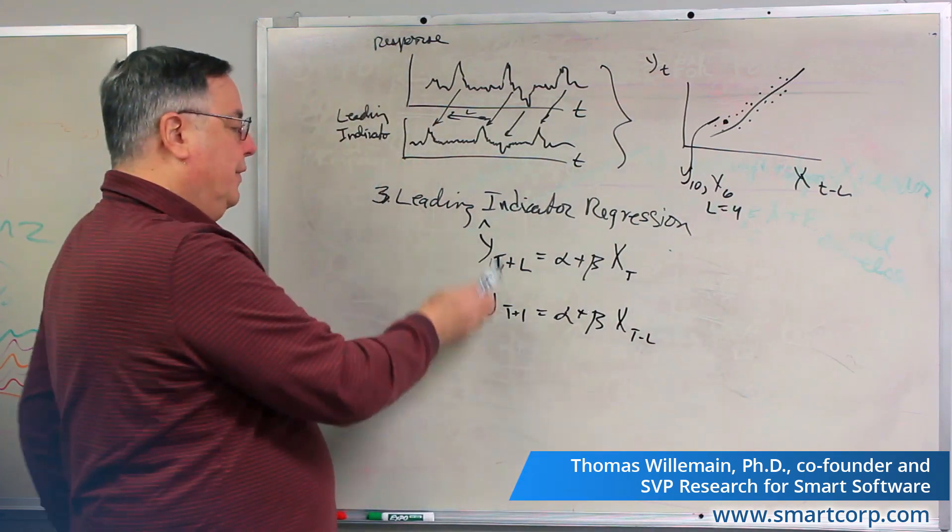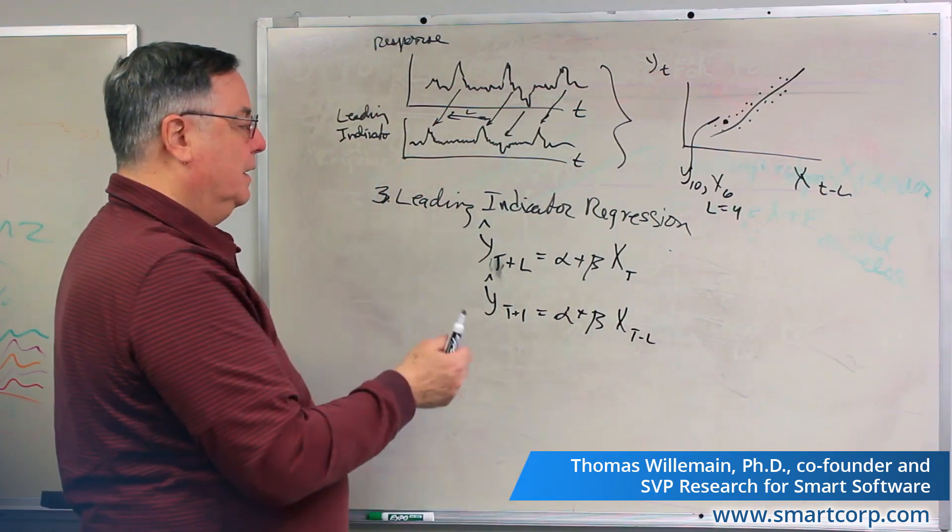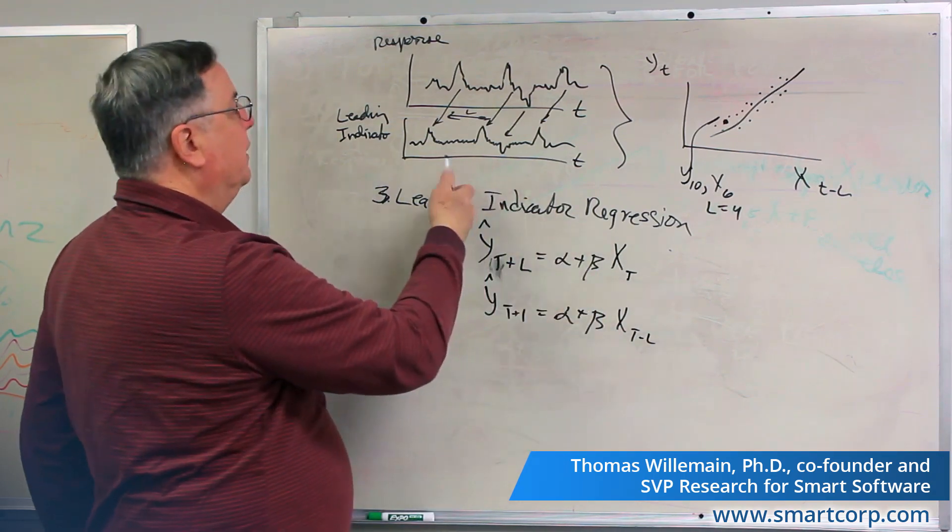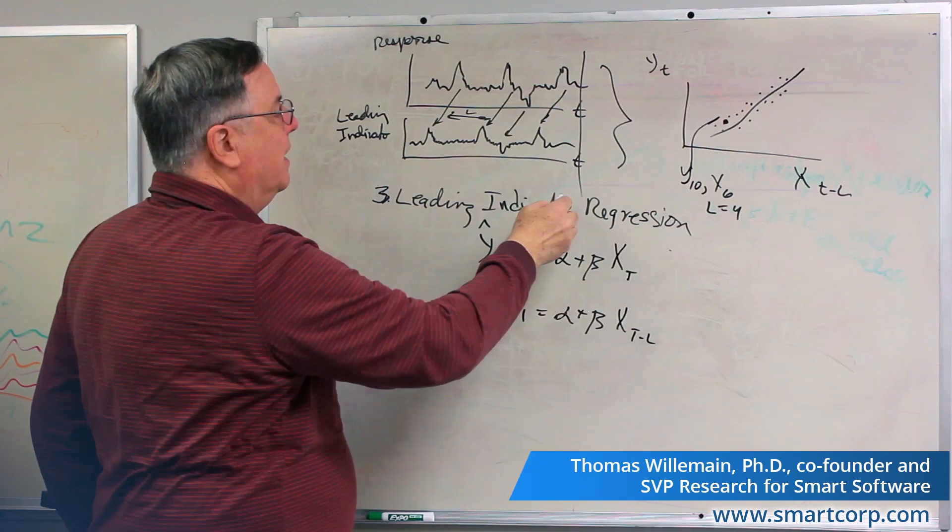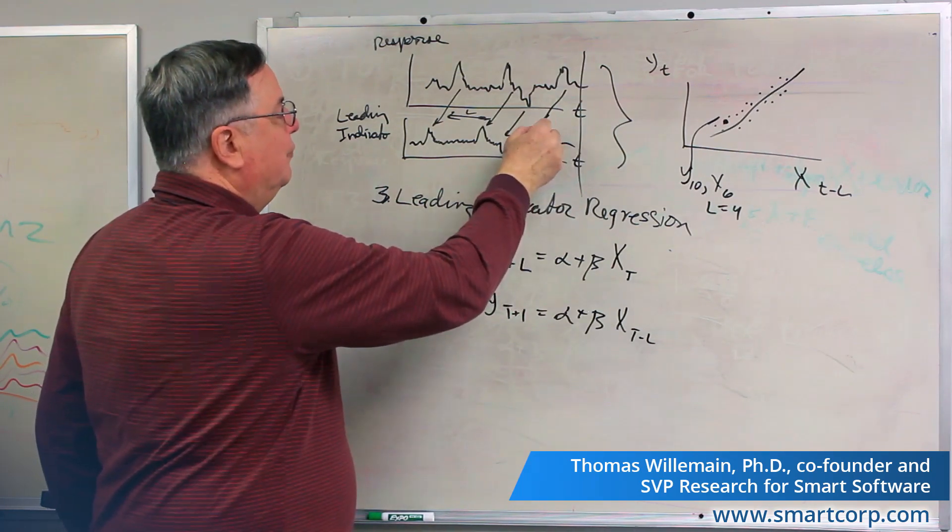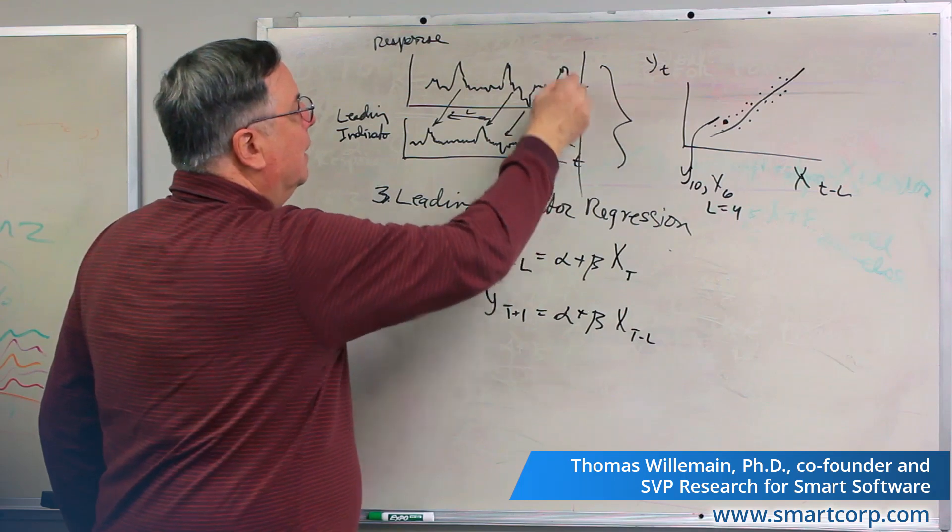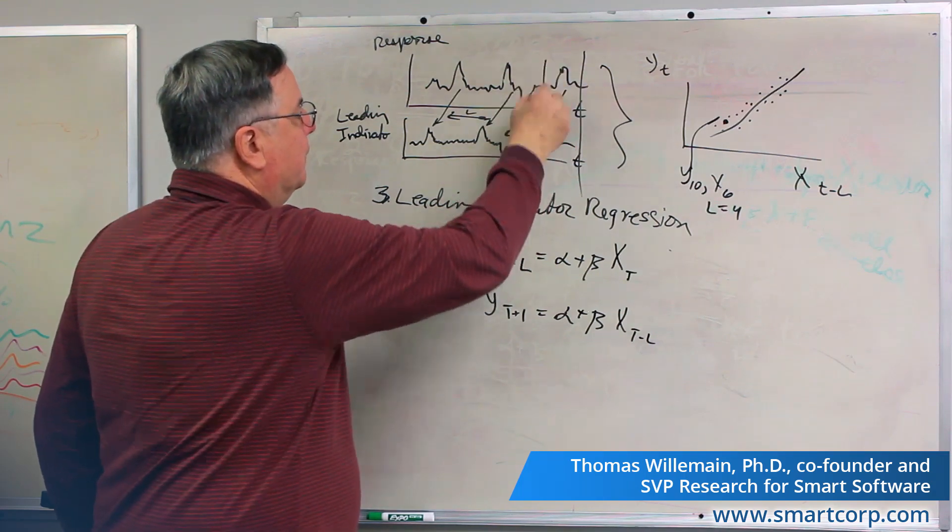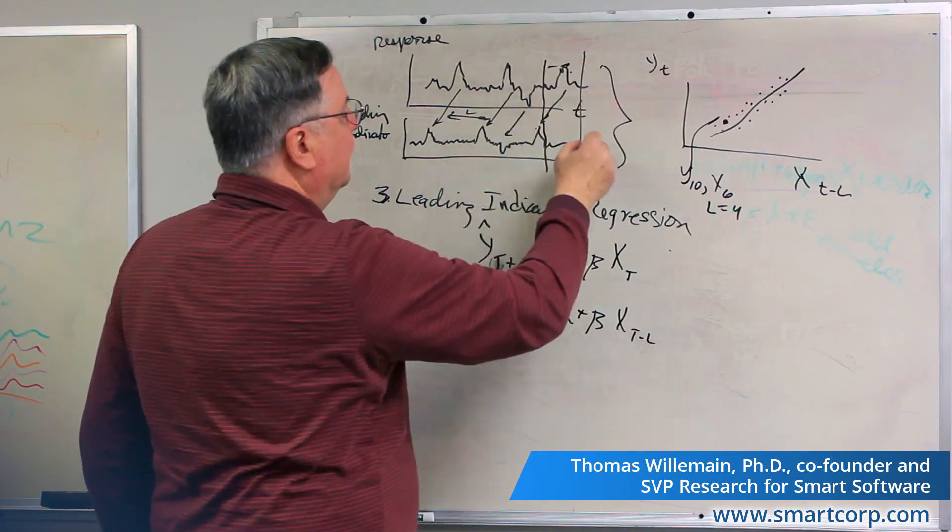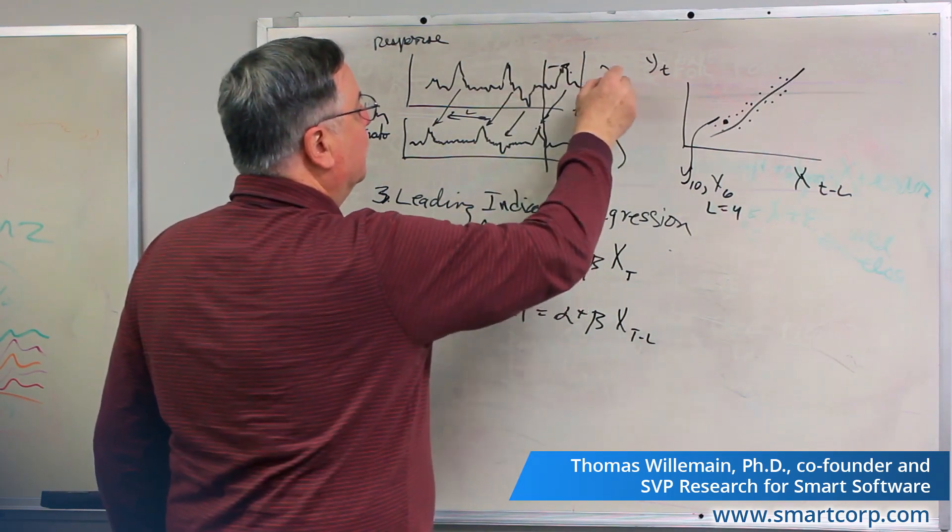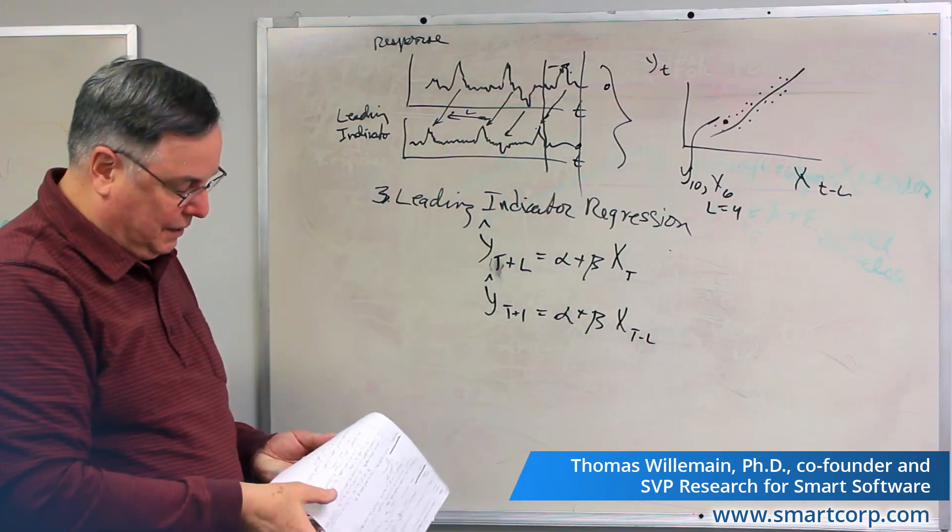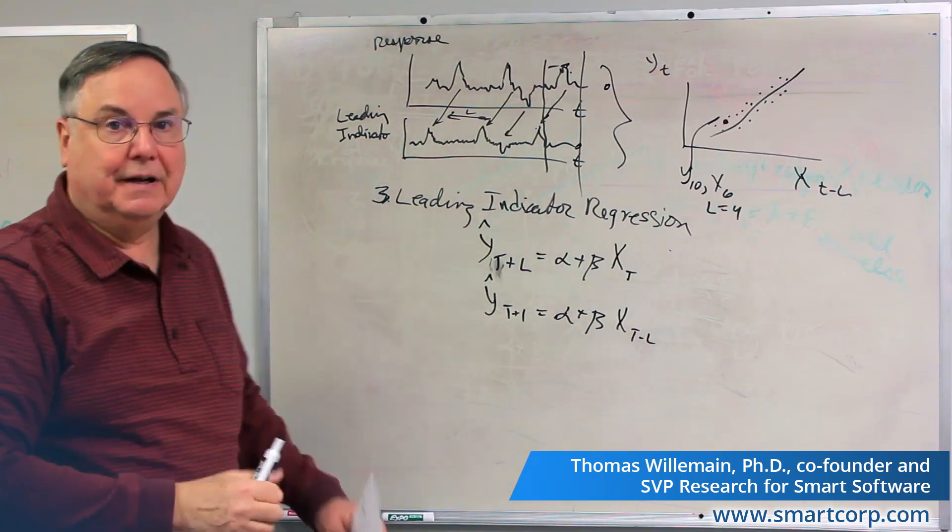This sort of relationship is just like causal modeling, only you have the luxury, at this particular time, you've already seen this. You know what this value is. If you're at this time, you will know what happens after L. And if you're right here, you'll know what's going to happen out here, L periods ahead. So that's a leading indicator type of analysis.